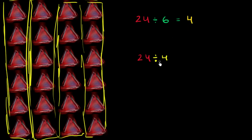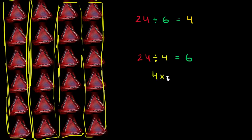Now let's think about what 24 divided by 4 is. If I view 24 divided by 4 as taking 24 and dividing it into 4 equal groups, I've just drawn that — I have 4 equal groups and in each group I have 6. So notice 24 divided by 6 is 4, and 24 divided by 4 is 6. That's because I could view this as 4 groups of 6, or say that 4 times 6 is equal to 24. Or you could equivalently say that 6 times 4 is equal to 24.